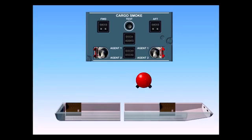When either the forward or aft switch is toggled downward to the agent two position, the respective squib on bottle number two is triggered and the halon enters the respective compartment.